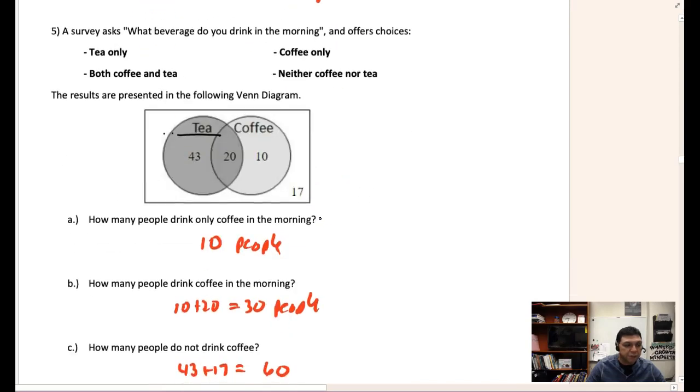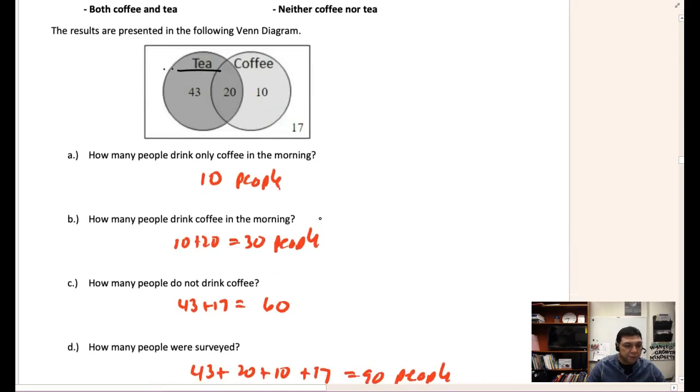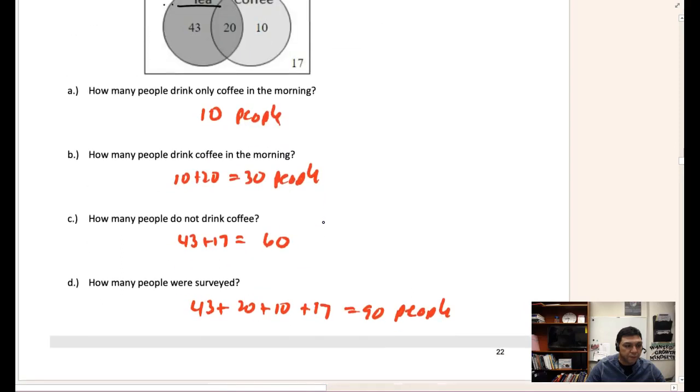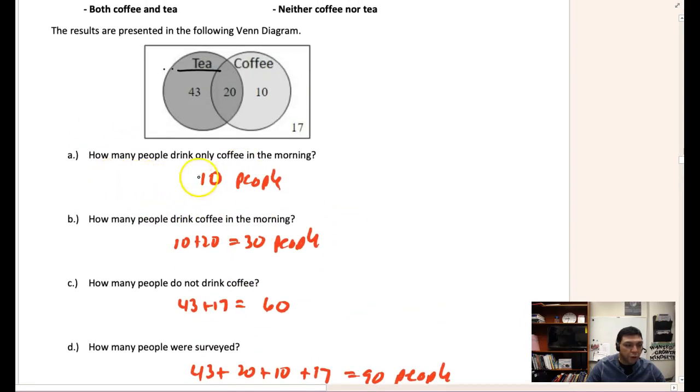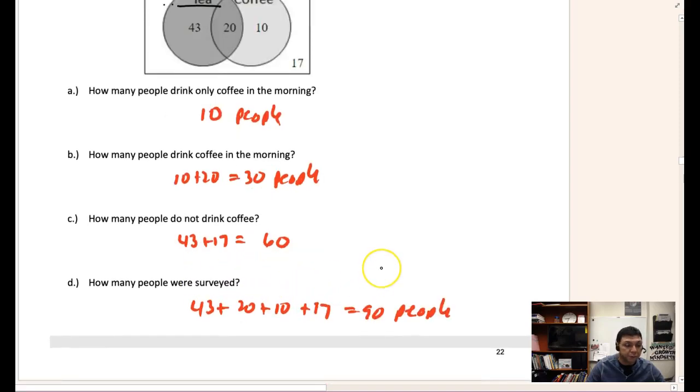And then see if you can answer the next questions there. There's the answers to those questions, and again looking at the keywords only. Drink coffee - that's 30 because you're putting the 20 and 10 together. They drink tea also but they also drink coffee, so they have to be included in that count of people. And how many people were surveyed? Again, you see the total amount there.